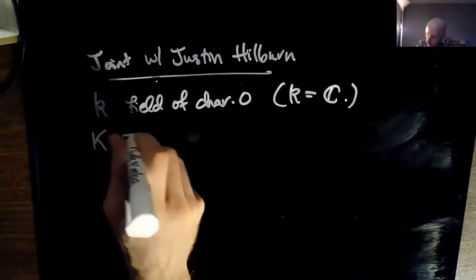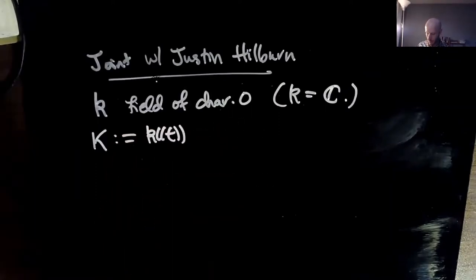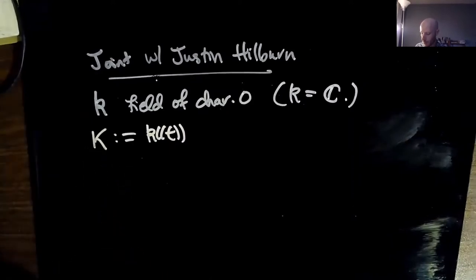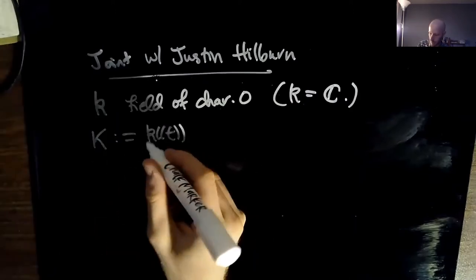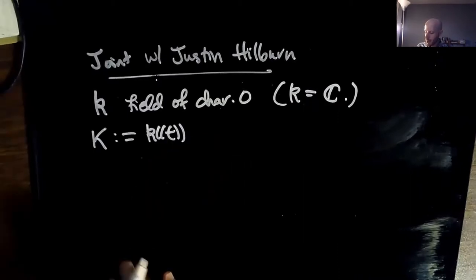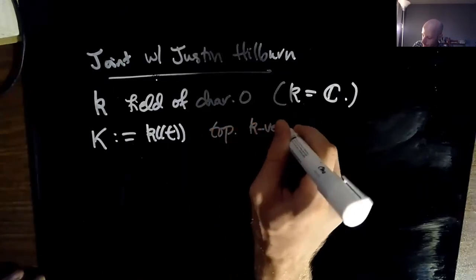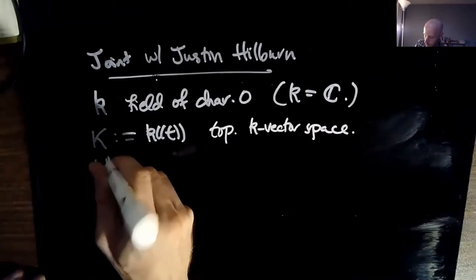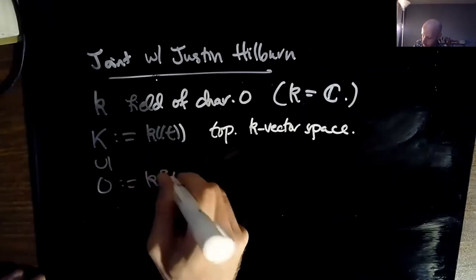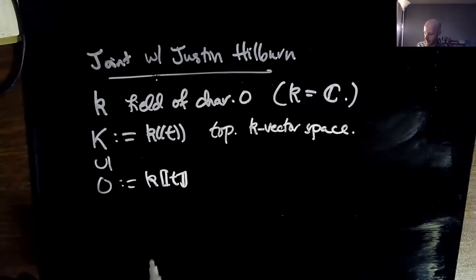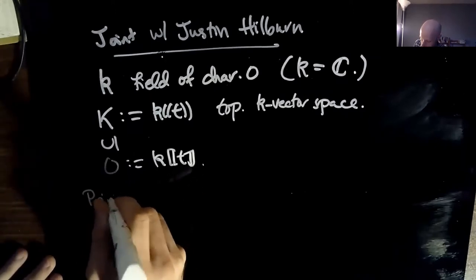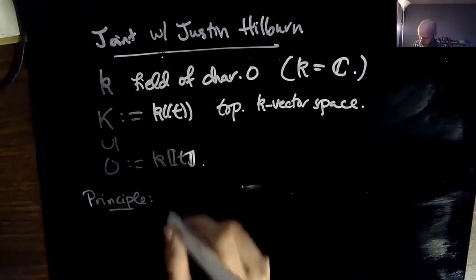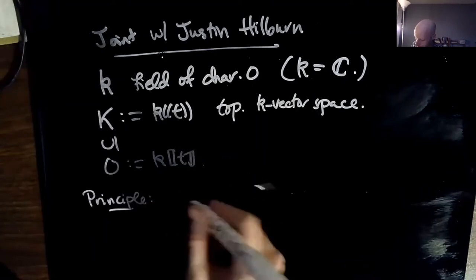I'm going to take big K to be the field of Laurent series over k. When k is a finite field, big K gives one favorite kind of local field. Here I'm taking this huge infinite-dimensional vector space with some kind of topology — I want to think about the sequence t^n tending to zero. So this is a topological k-vector space. Inside of here, I'll fix O to be the subring of Taylor series.